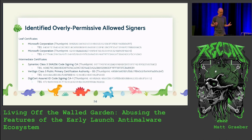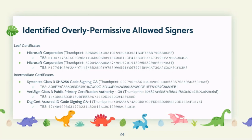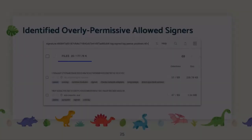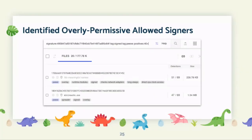Considering the VeriSign example: I associated the TBS hash to the thumbprint starting with 495. In VirusTotal, I searched for anything signed with that certificate, with a valid signature and 40 or more positive AV detections. The result: 177,000 malware samples that can now run at the Anti-Malware Light protective level.